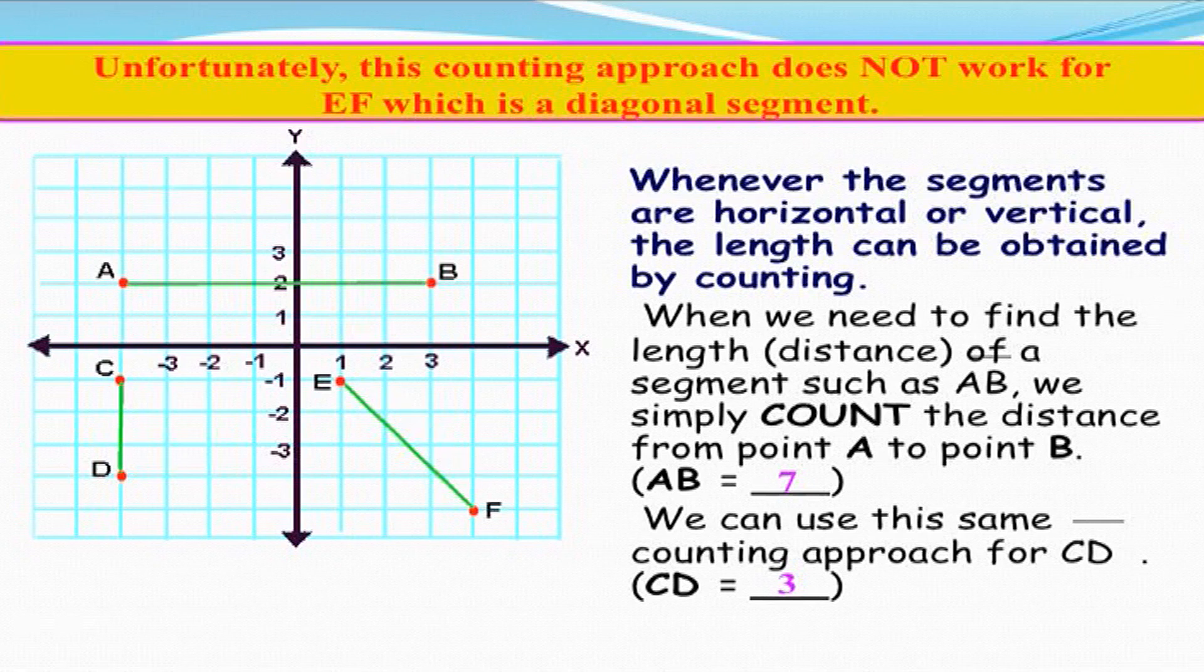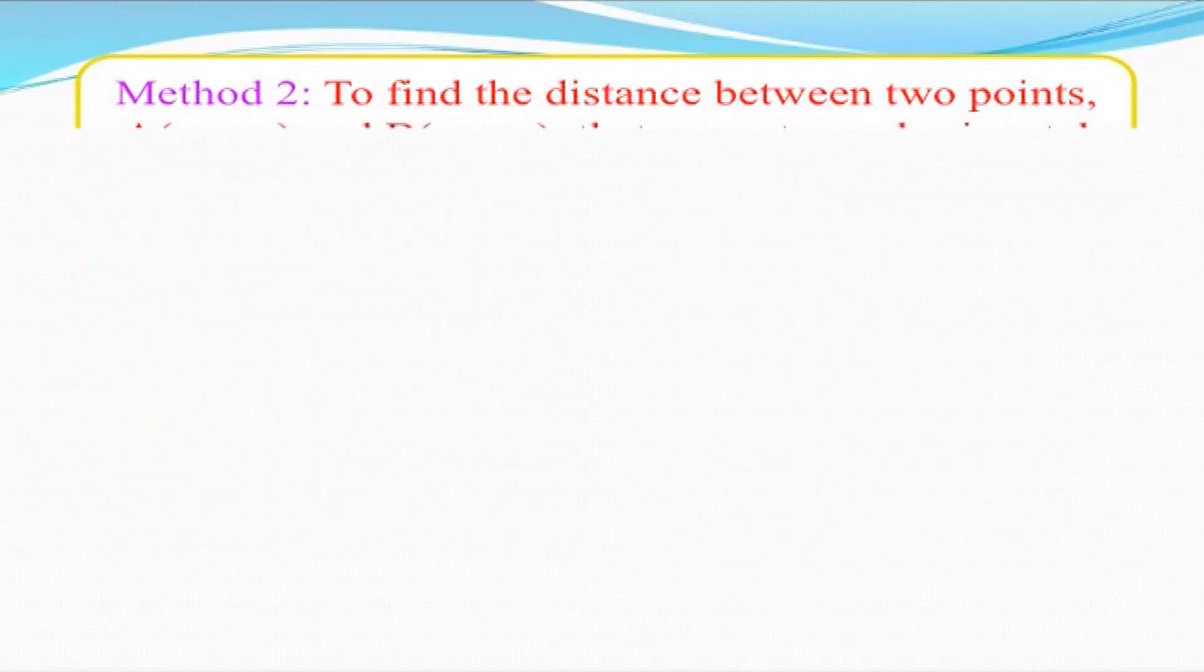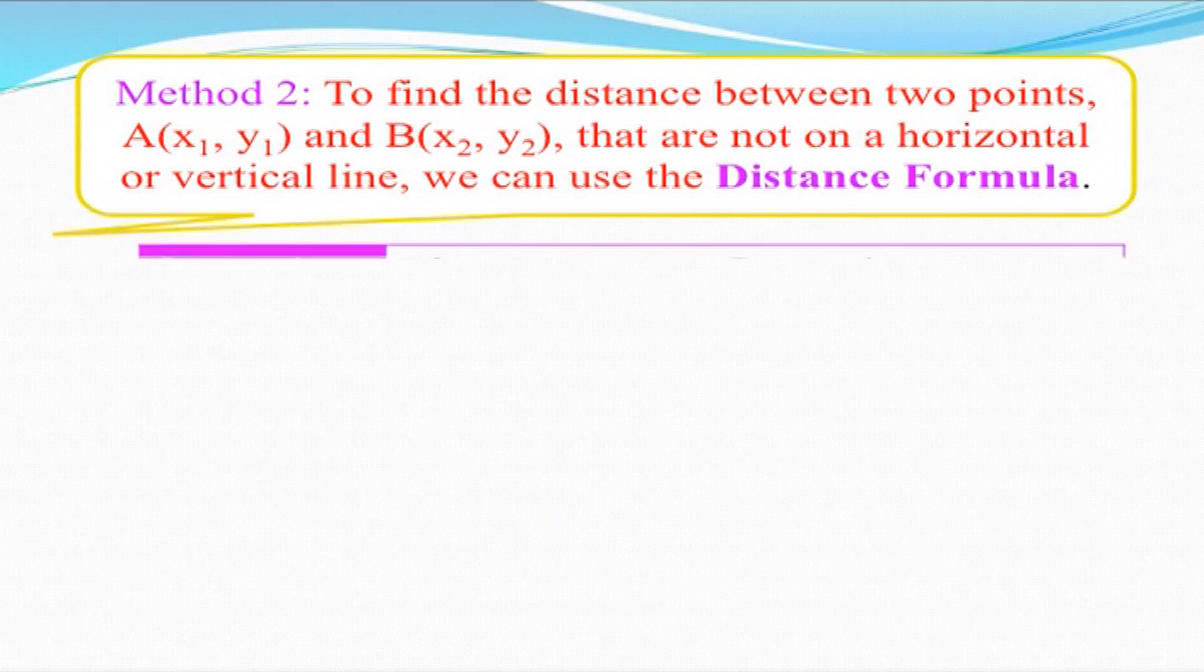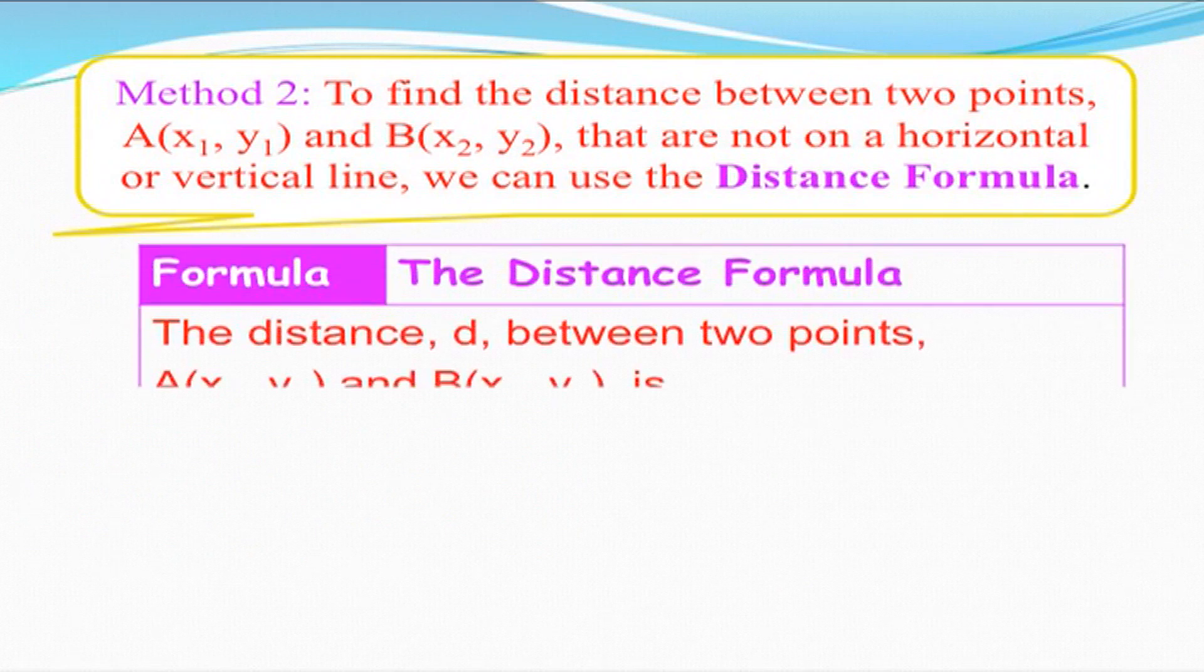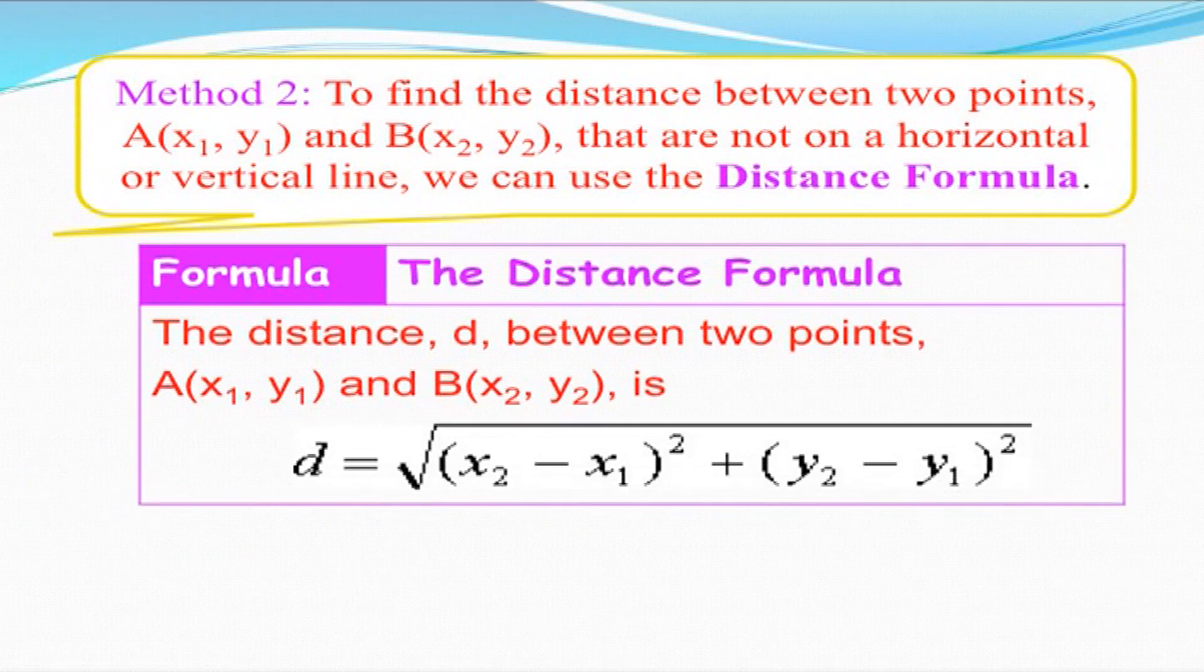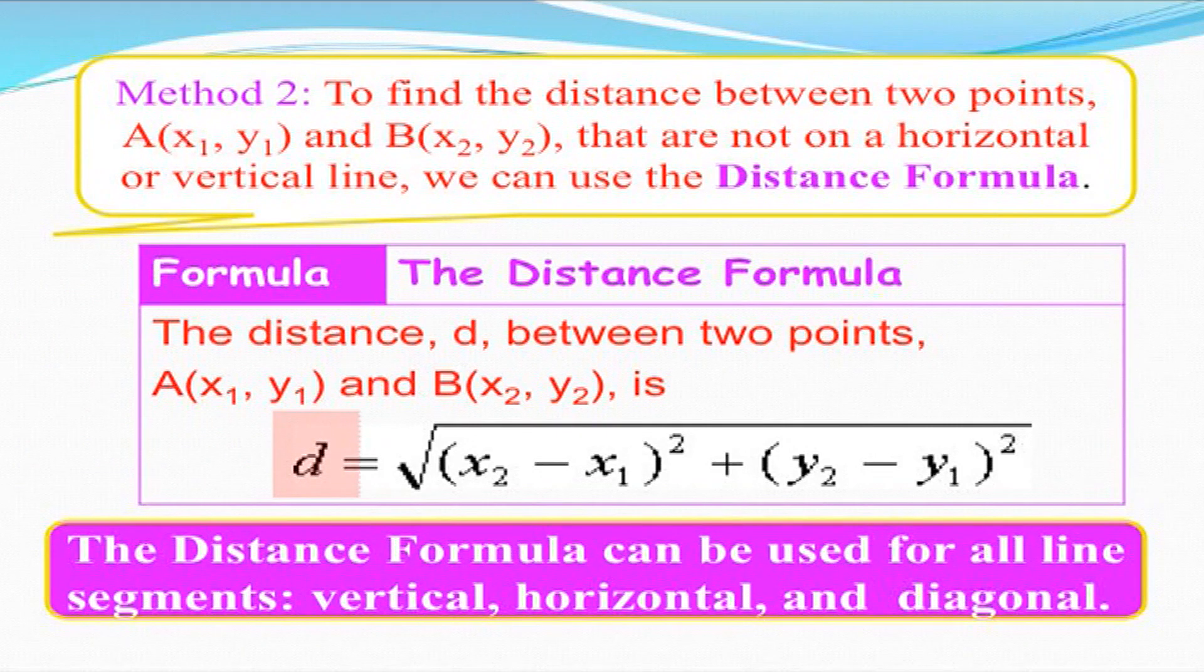For finding out the distance d between two points whose coordinates are x₁, y₁ and x₂, y₂, we use the formula: distance equals the square root of (x₂ minus x₁) whole square plus (y₂ minus y₁) whole square.